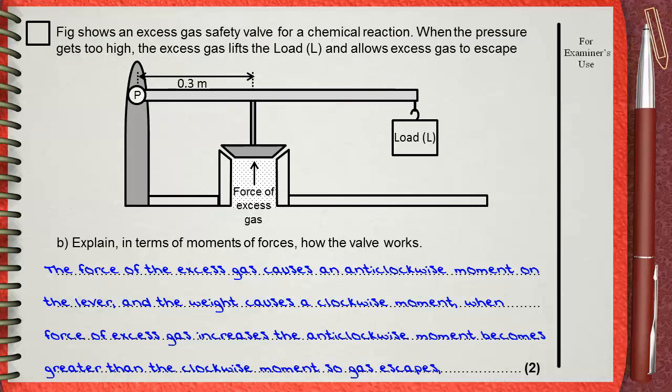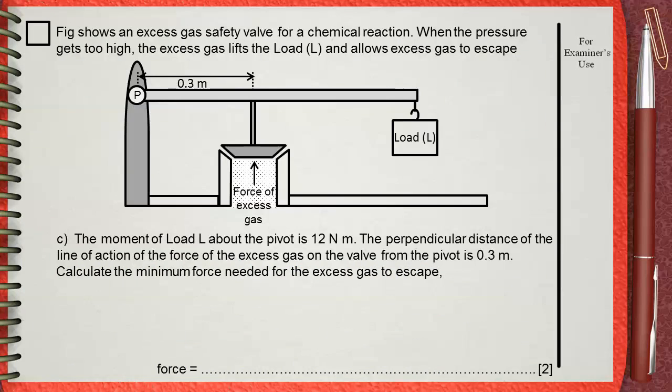Part C: The moment of the load L about the pivot is 12 Nm. The perpendicular distance of the line of action of the force of the excess gas on the valve from the pivot is 0.3 meters. Calculate the minimum force needed for the excess gas to escape.